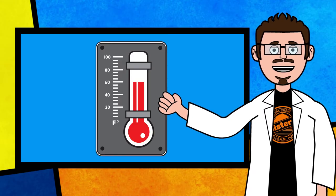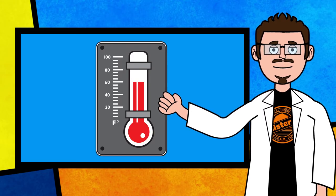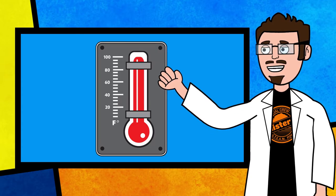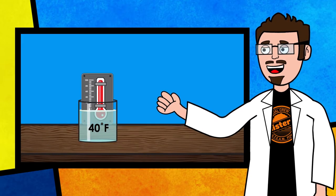A thermometer is a tool that scientists use to measure the heat energy of an object. The thermometer has indicating fluid inside of it which expands as it gains heat energy and contracts as it loses heat energy.